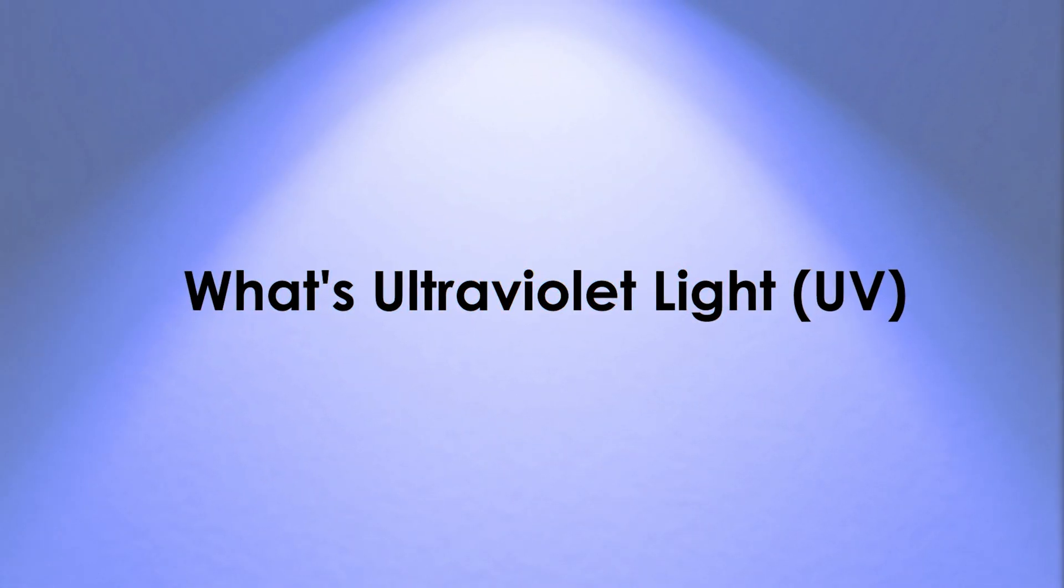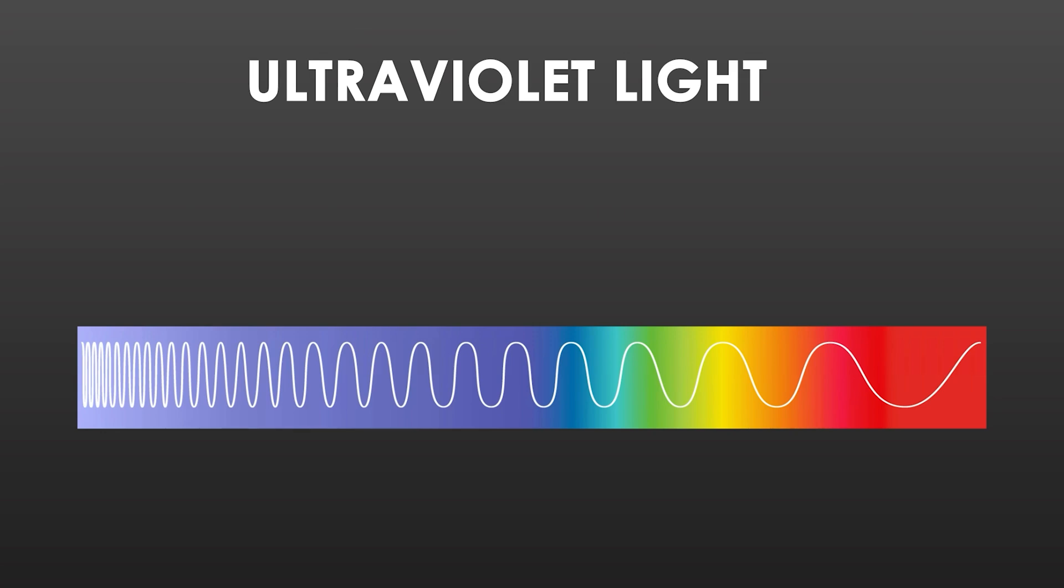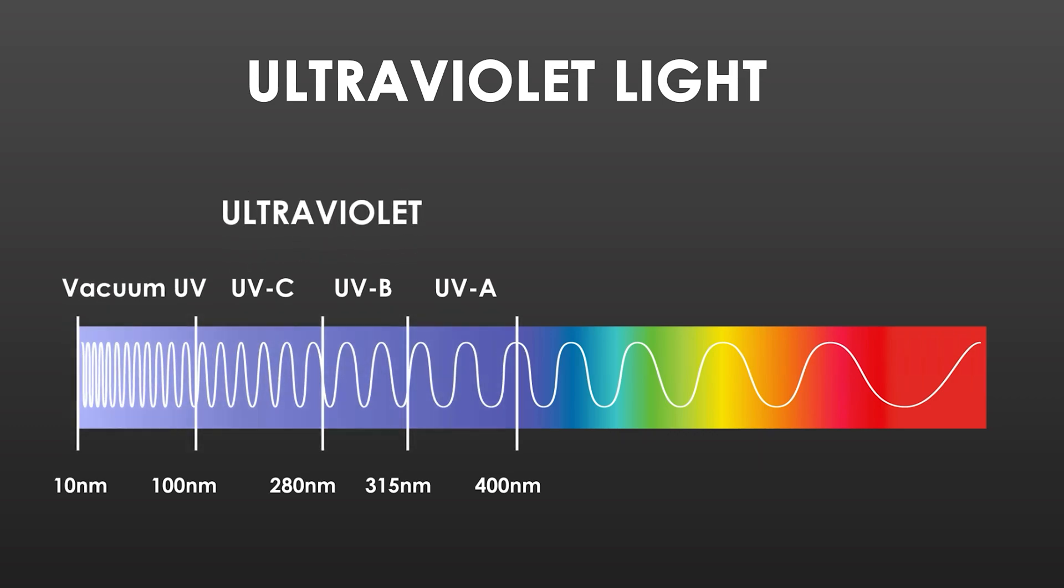What is ultraviolet light? Ultraviolet light is emitted by the sun and ranges from 100 to 400 nanometers in wavelength. There are three main types of UV light: UV-A, UV-B, and UV-C. For plants, UV-A is generally the least harmful and is often used as a planting light.